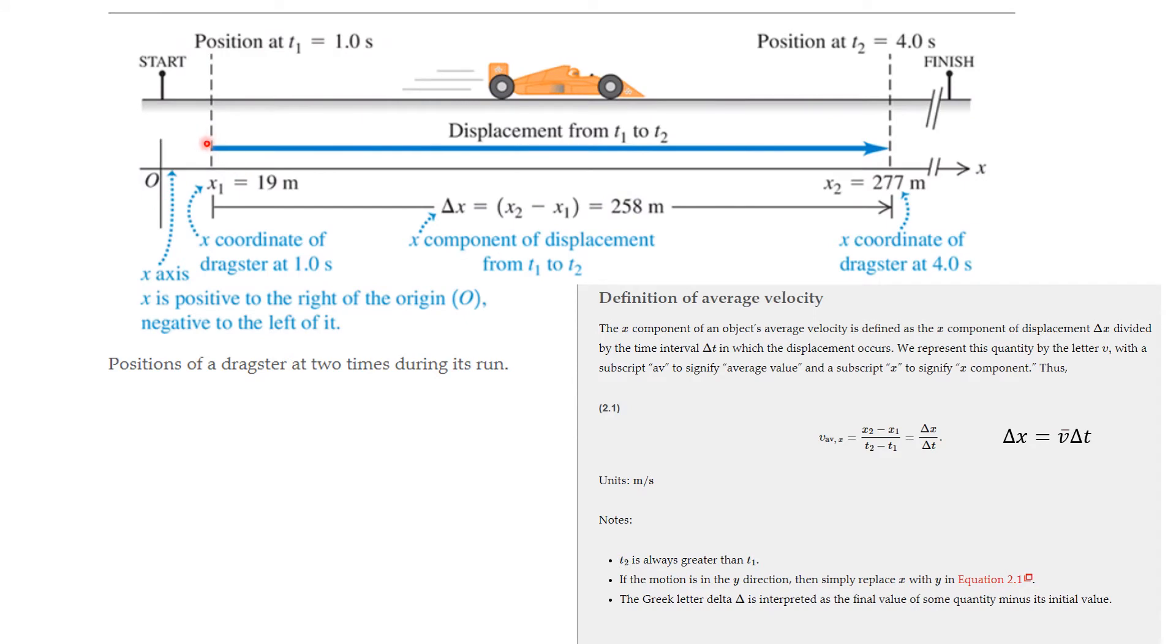We're going to be talking about velocity here, and speed, and even acceleration. So let's suppose that we have a drag car. Here's the starting line. Here's the finish line. The car starts here at a stop, but its position at time t1, at one second, is here at 19 meters, and at t2, which is four seconds, it is over here at 277 meters on its way.